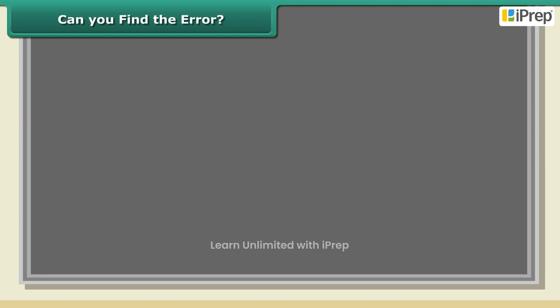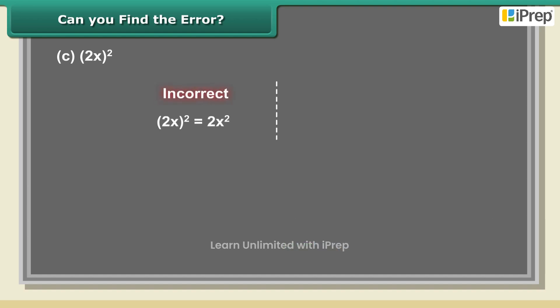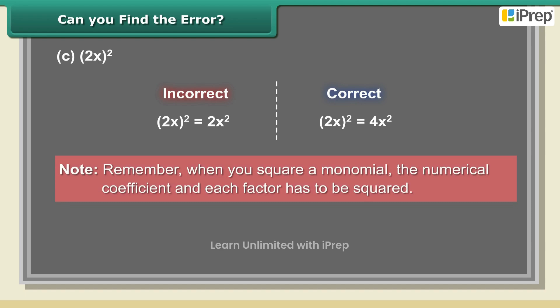(c) (2x)². Incorrect: (2x)² = 2x². Correct: (2x)² = 4x². Remember, when you square a monomial, the numerical coefficient and each factor has to be squared. Therefore, (2x)² = 4x² is the correct solution.